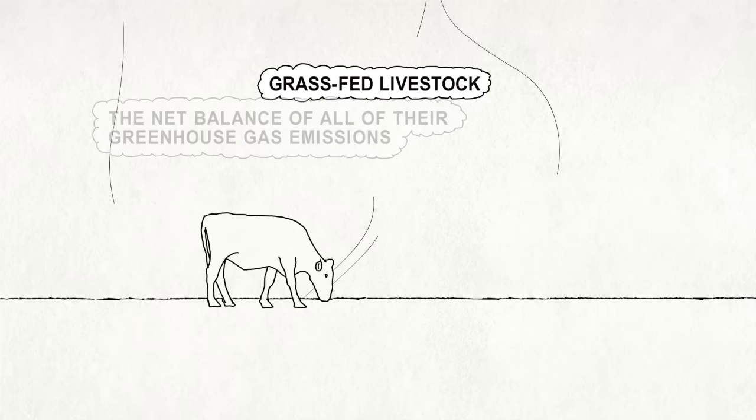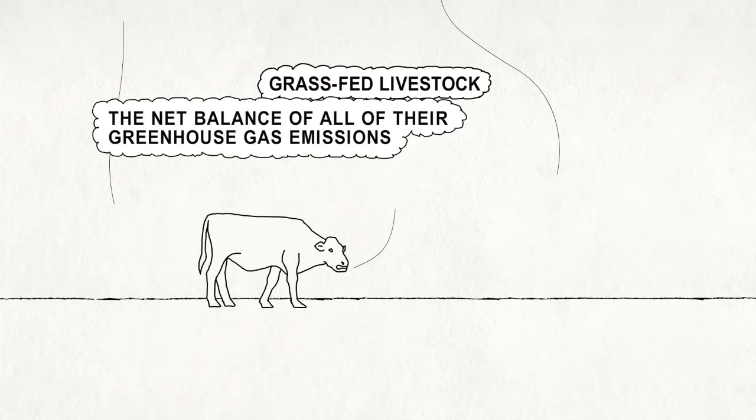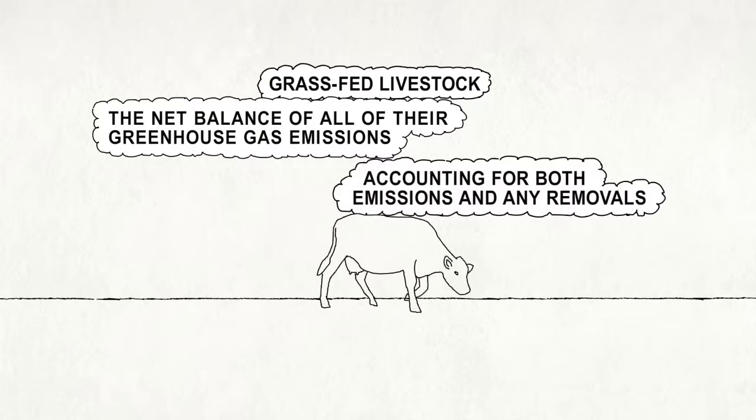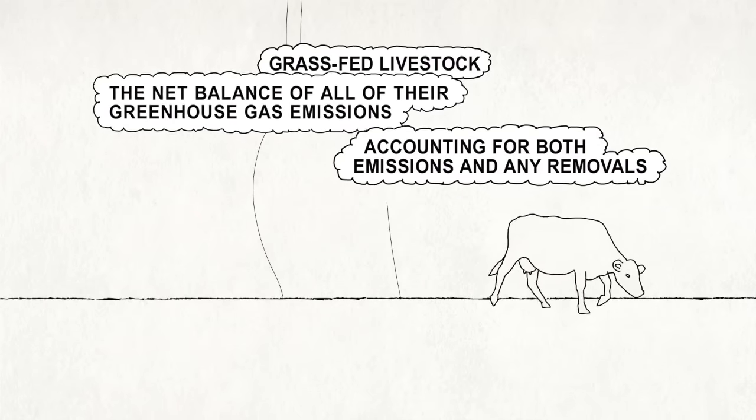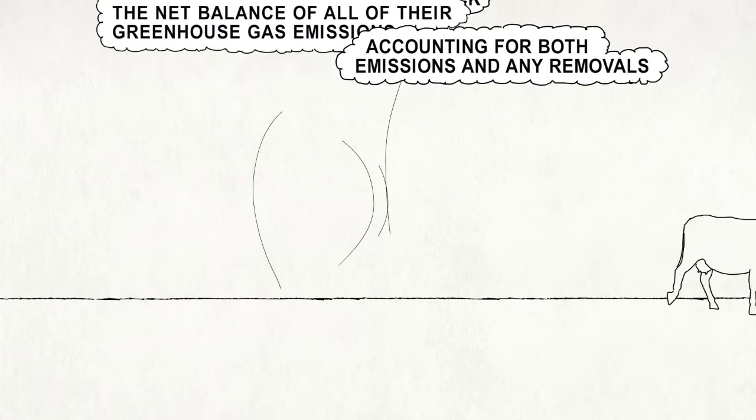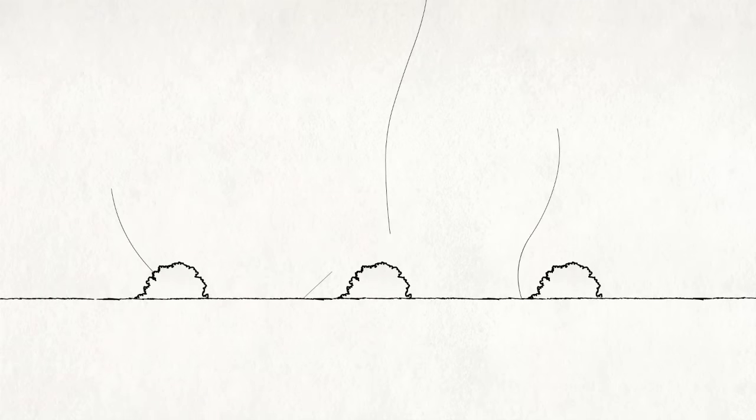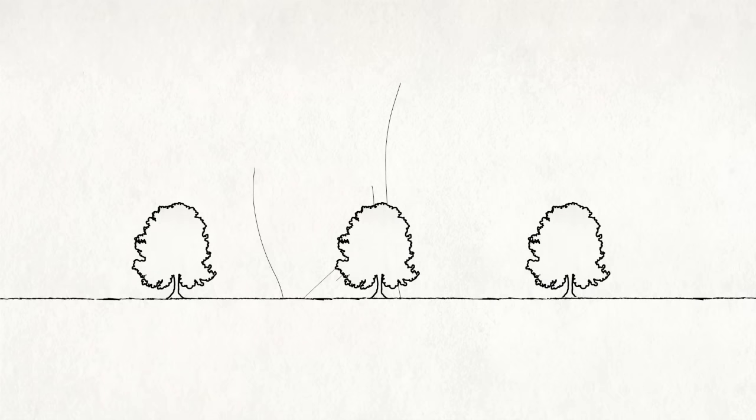But the researchers' analysis focused on just one important aspect of this wider picture: grass-fed livestock and the net balance of all their greenhouse gas emissions, accounting for both emissions and any removals via sequestration. The research did not compare grass-fed livestock with any other production system or species of livestock.